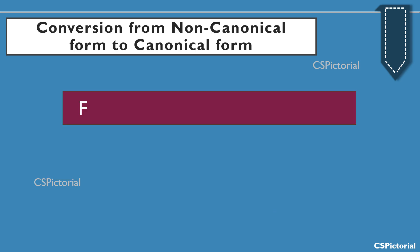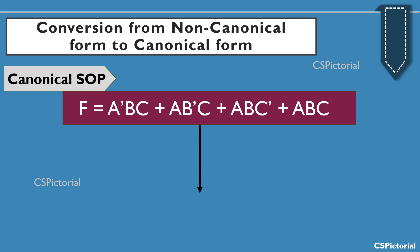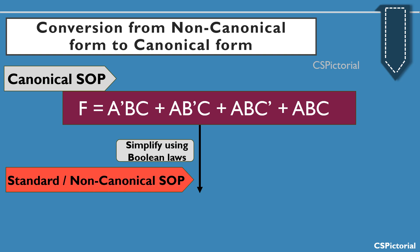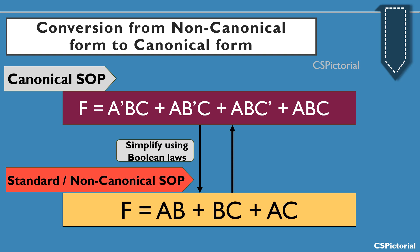Now we are clear that a canonical SOP expression can be simplified using Boolean laws to obtain a simplified standard or non-canonical SOP expression. But the question arises: how to make the conversion vice versa? That is, how to generate a canonical SOP form from the given standard SOP? We will try to understand the step-by-step procedure with an example.